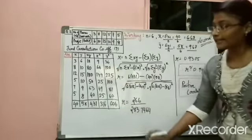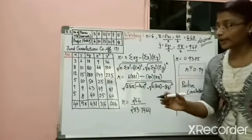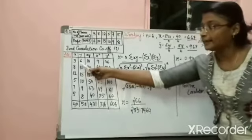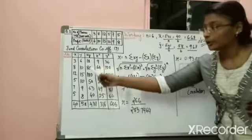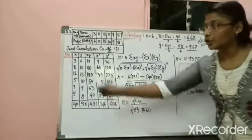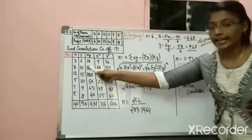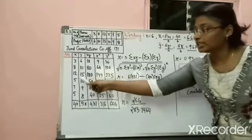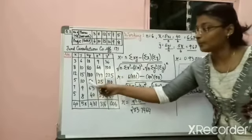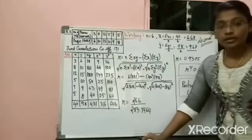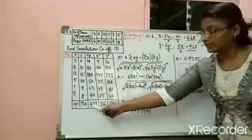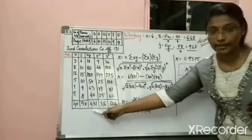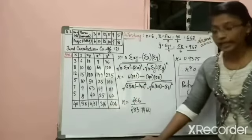xy means the product of x and y — that is multiplying column x by column y to get xy. So 3 × 6 = 18, 8 × 10 = 80, 12 × 15 = 180. Like this you have to multiply and get the total at the end. After calculating xy you have to sum it up, and your answer would be 431.